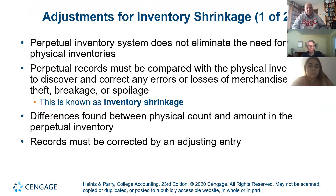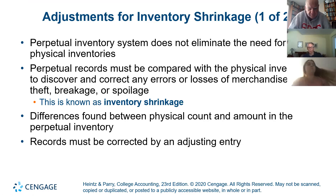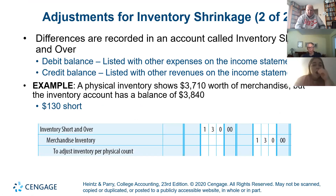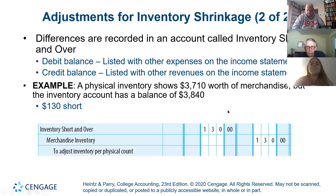Inventory shrinkage — all of a sudden you don't have 100 shirts, you only have 19. Somebody may have stolen one, or you sold one but entered the wrong part number. When our inventory is on a perpetual system, it doesn't mean everything is perfect. If we find we have to reduce inventory, the adjusting entry is: debit cost of goods sold (inventory short or over) and credit merchandise inventory. Once a year this company counts — say they counted $37,100 but the system showed $38,400, that's a shortfall of $1,300. It can also go the other way: if they counted more, you debit the inventory and credit inventory short or over.